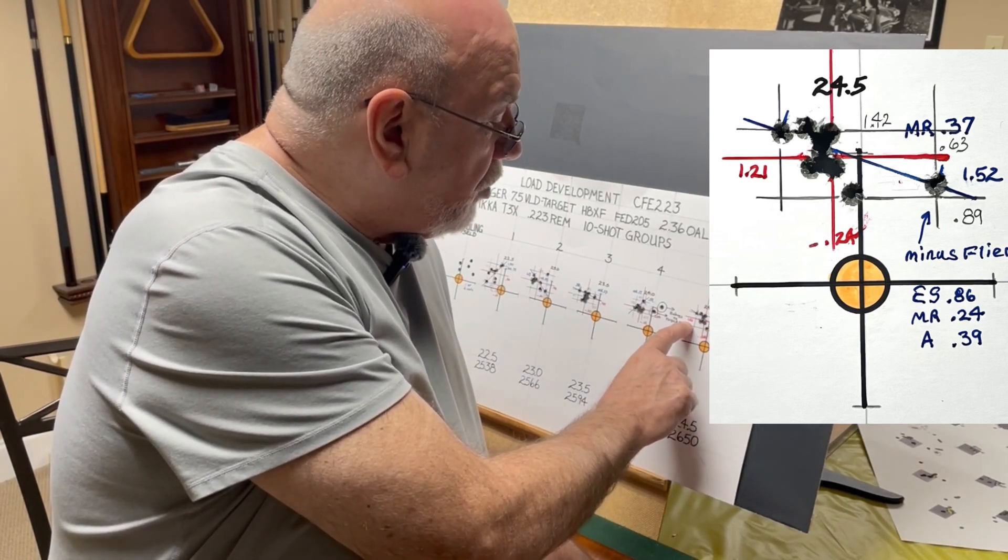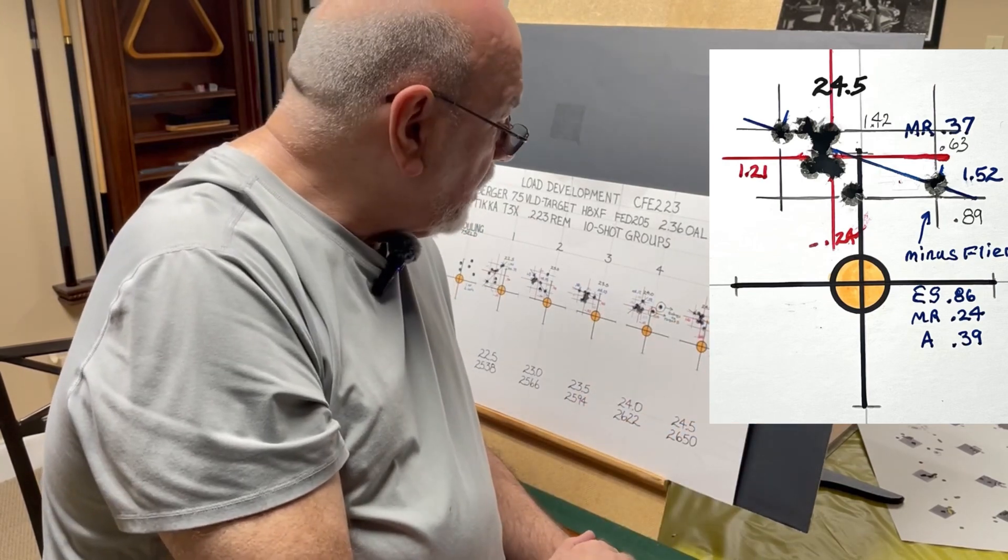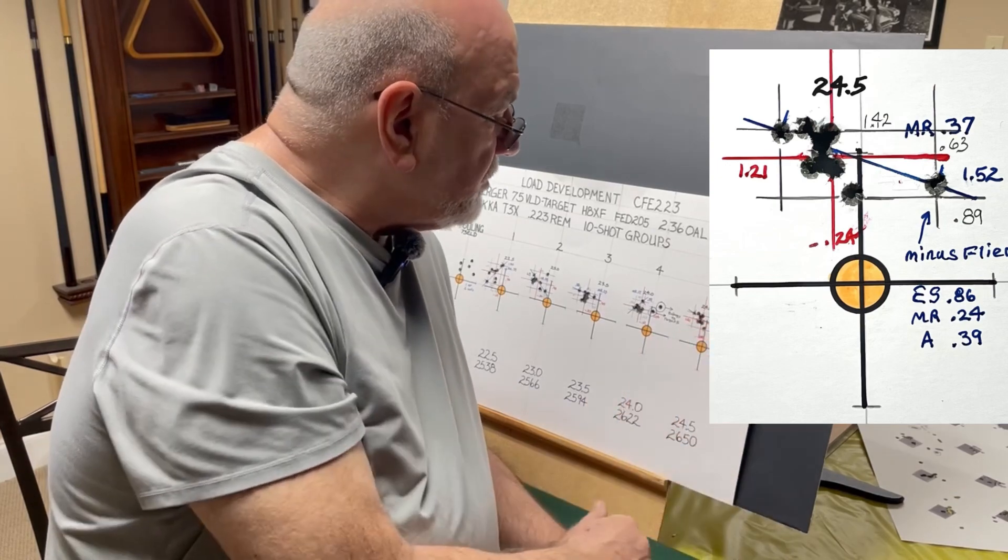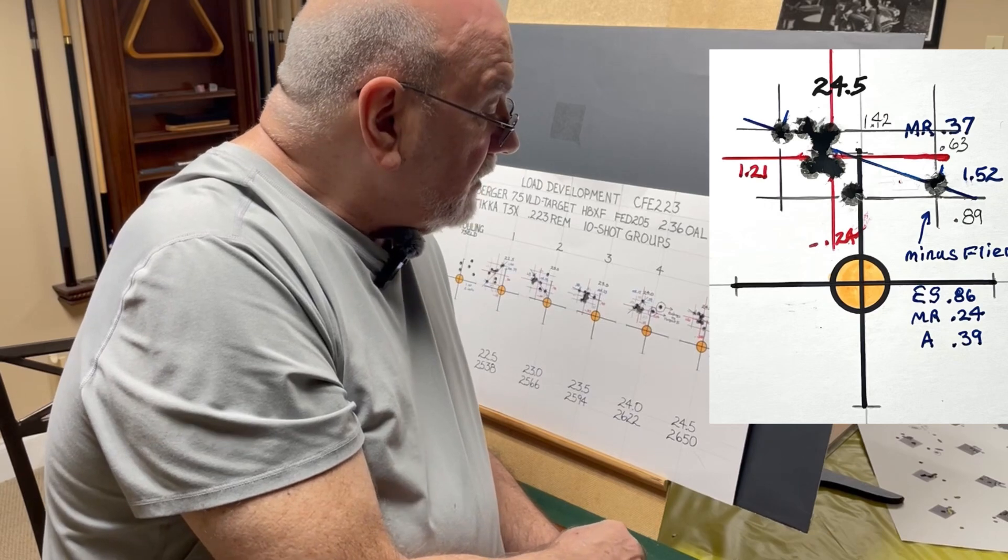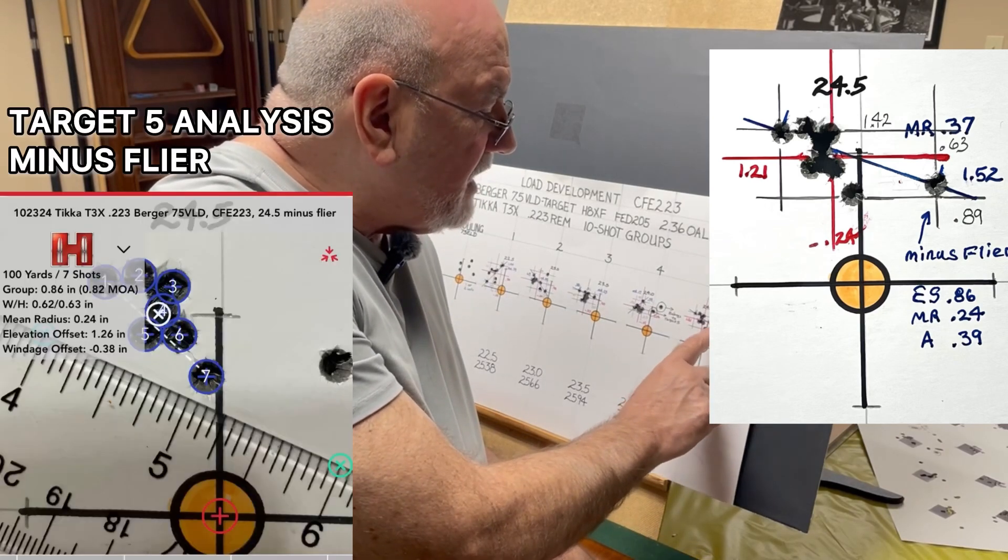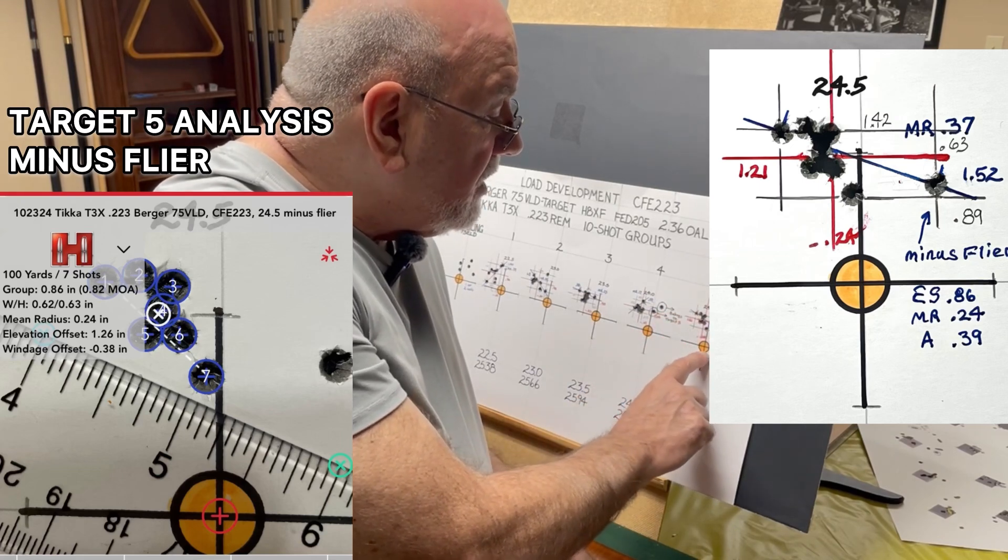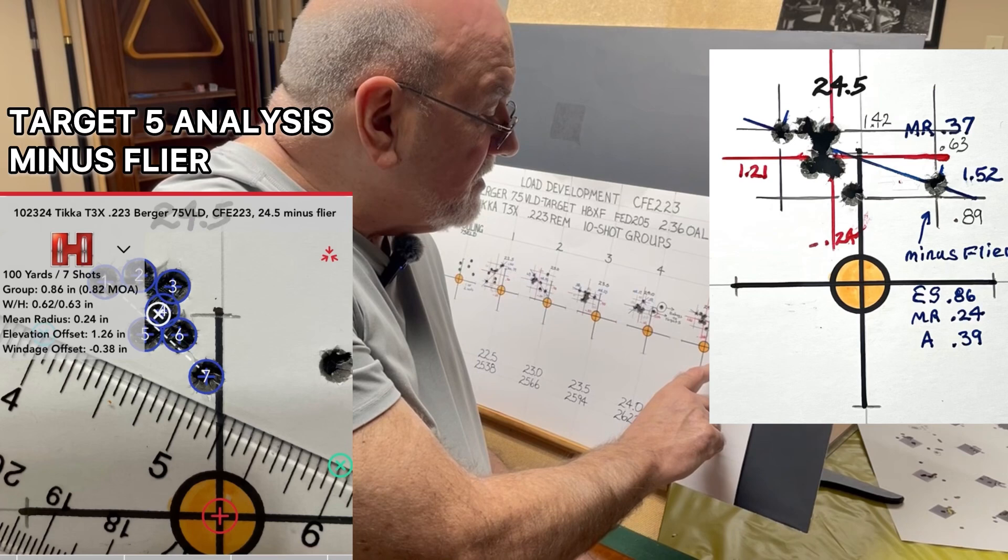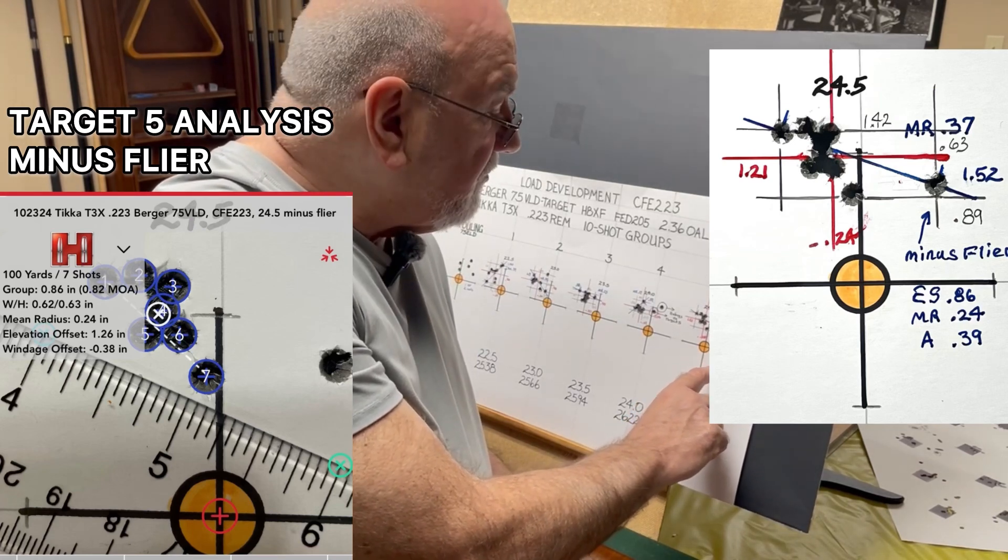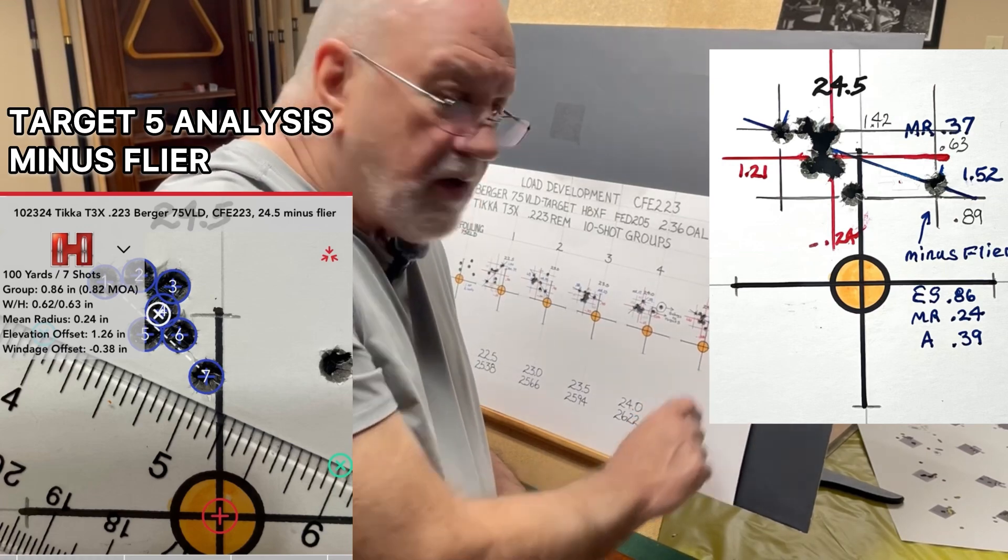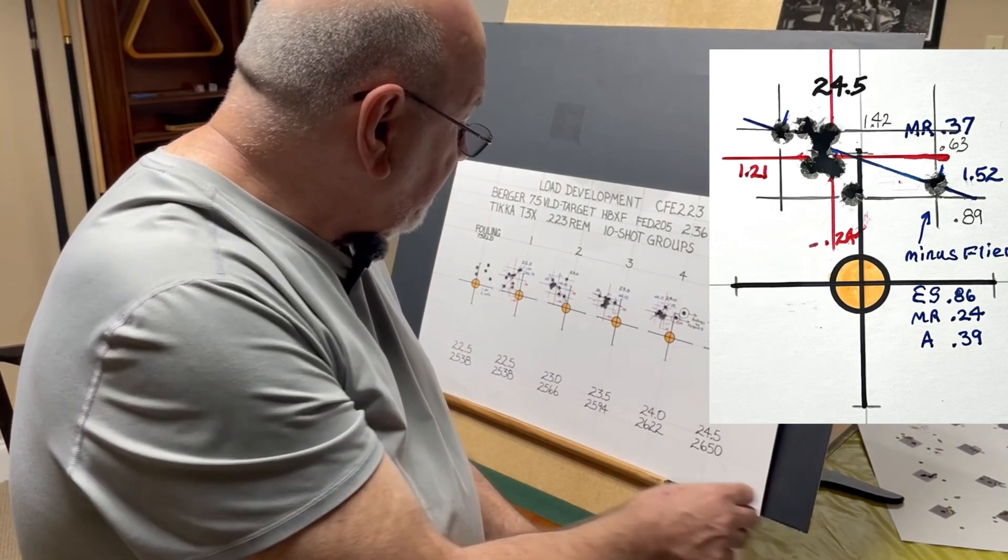We're shooting 1.21 inches high, so again shooting a little bit higher because of the increased charge weight and shooting a little bit more to the right now, but we're still 0.24 inches to the left. Now I analyze this taking that flyer out. If you take that flyer out and you've got seven out of eight shots here, you've got an extreme spread of 0.86, you've got a mean radius of 0.24 which gives you an average group size of 0.48, and you have an area of 0.39 inches.